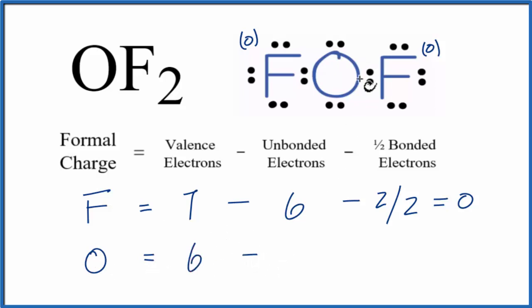We'll subtract the unbonded. We have 2, 4 of those. And then we'll subtract one half of the bonded. These are the electrons between the atoms. They form the chemical bonds. We have 2, 4 of those.